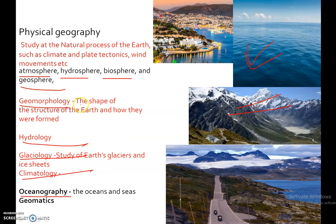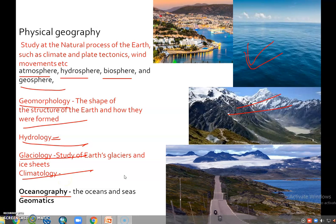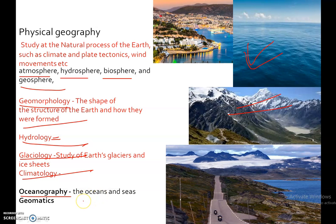In geomorphology, they study the shape and structure of the earth and how they were formed. In hydrology, the study is about water bodies — lakes, rivers, dams, and oceans. In glaciology, they study the earth's glaciers and ice sheets. In climatology, they study temperature, winds, and precipitation. In oceanography, they study the ocean and sea.